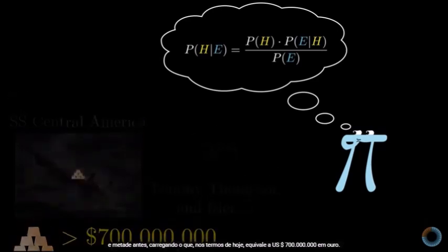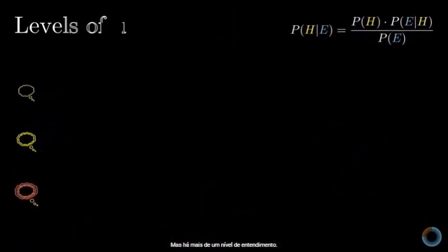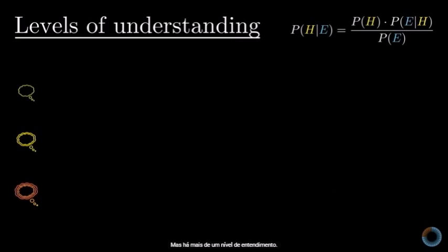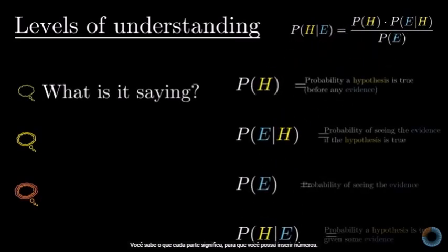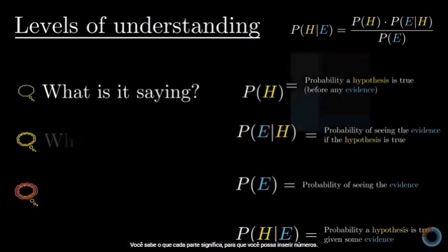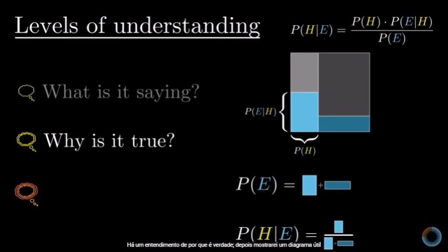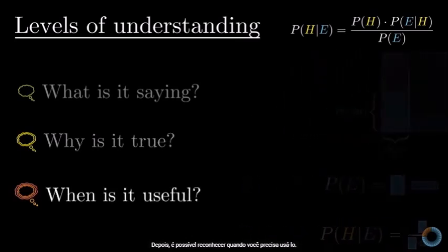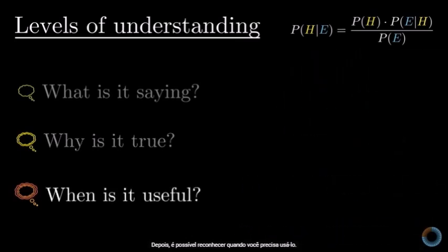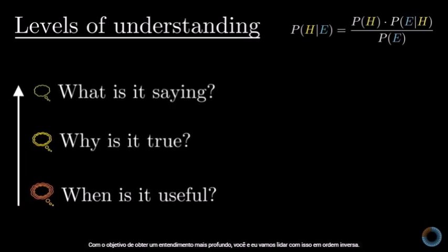So it's a formula worth understanding, but there are multiple different levels of possible understanding. At the simplest, there's just knowing what each one of the parts means, so that you can plug in numbers. Then there's understanding why it's true, and later I'm going to show you a certain diagram that's helpful for rediscovering this formula on the fly. But maybe the most important level is being able to recognize when you need to use it. We're going to tackle these in reverse order.